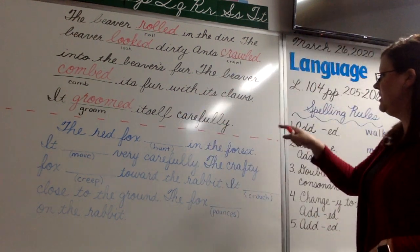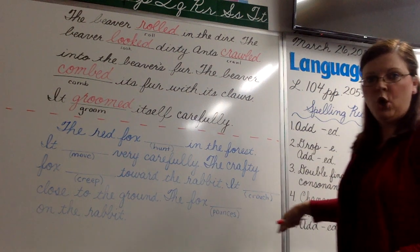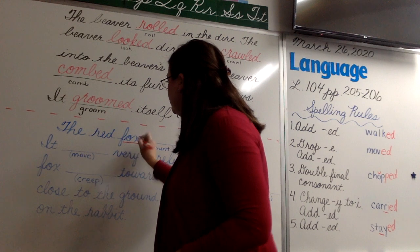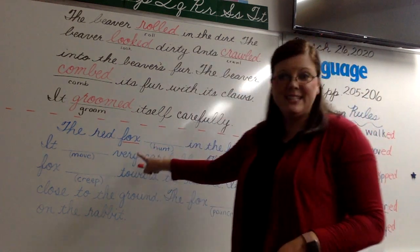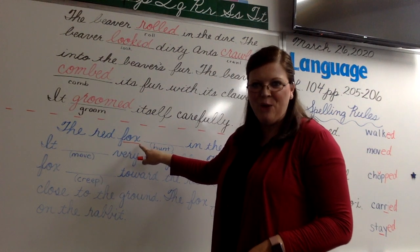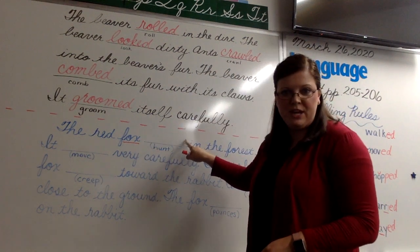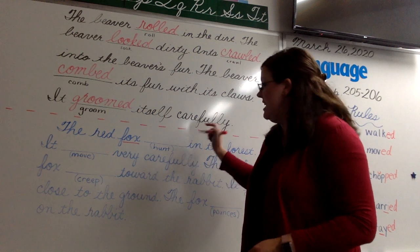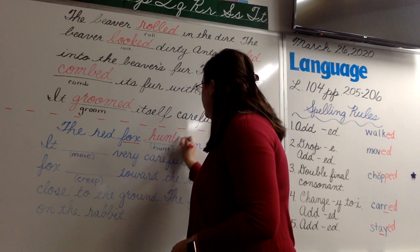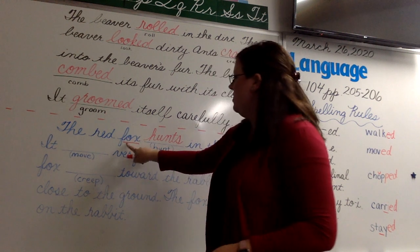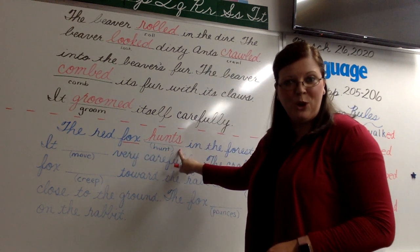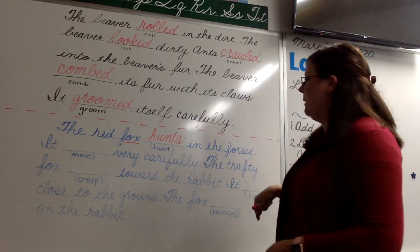The red fox blank in the forest. Who or what is that sentence about? Fox. Fox is singular — singular means one. There's no S on fox, so the volleyball needs to be on the verb: H-U-N-T-S. This is singular, this is singular. Singular verbs end in S.